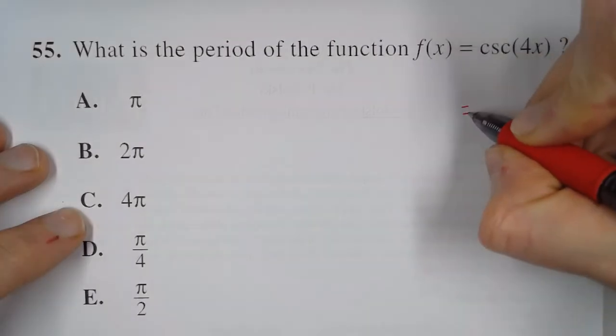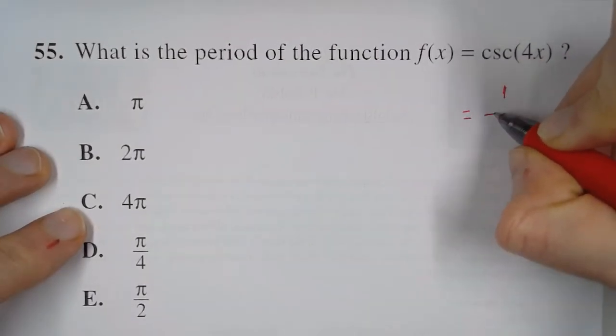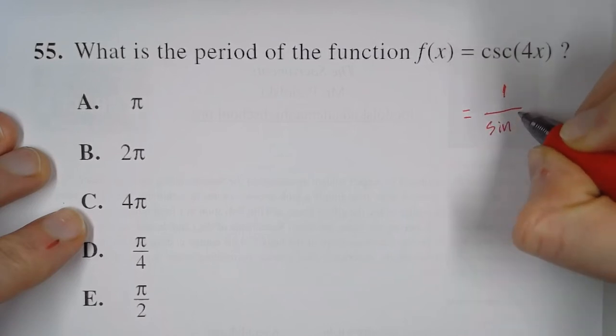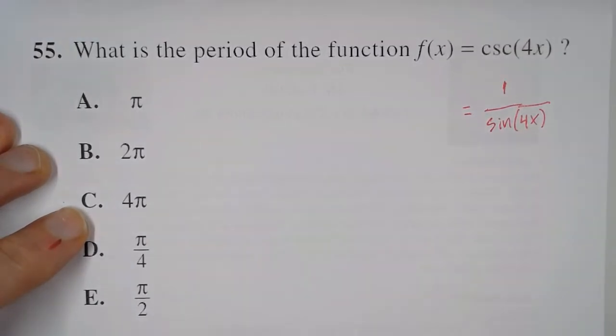Now, the thing to remember is that cosecant is the reciprocal of sine. So that means we could think of this as 1 over sin(4x).